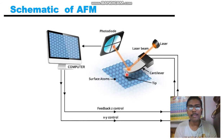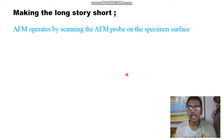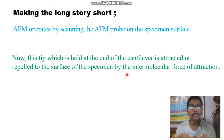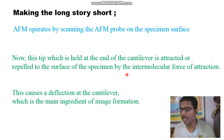AFM works based on a three-stage mechanism. First, the AFM probe moves on the specimen surface. Then, the tip held at the end of the cantilever is attracted or repelled to the surface of the specimen by the intermolecular force of attraction — which can be attraction as well as repulsion. This causes a deflection in the cantilever, which is the main ingredient of image formation.